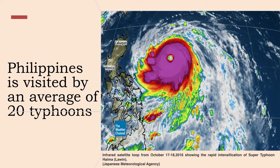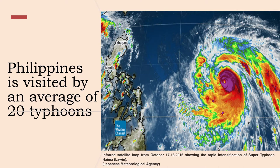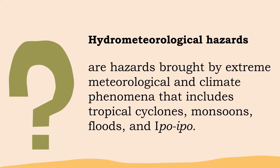Oftentimes, multiple hazards occur simultaneously. What are hydrometrological hazards? Hydrometrological hazards are hazards brought by extreme meteorological and climate phenomena that include tropical cyclones, monsoons, floods, and waterspouts, or ipo-ipo.